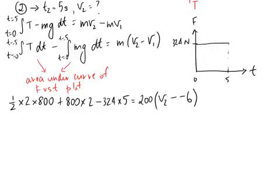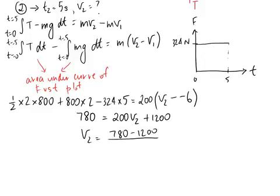So that's our equation and now it's just a matter of solving it. So if you put all of these numbers together on the left hand side, you end up with 780. On the right hand side, if you expand the bracket, you get 200 V2 plus 1200. And rearranging just to get V2 equals, your final answer should come out to be about negative 2.1 m/s.